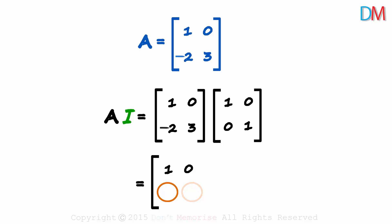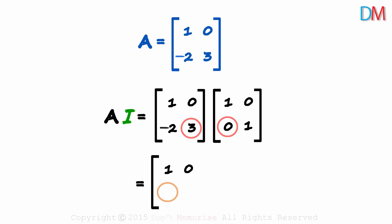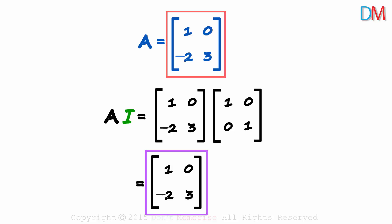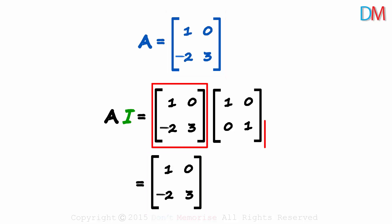Let's find the remaining two elements. The (2,1) element equals the second row multiplied by the first column: −2×1 + 3×0 = −2. And the last element is the product of the second row and the second column: −2×0 + 3×1 = 3. That completes our matrix, and we see that the product A×I gives us a matrix equal to matrix A.